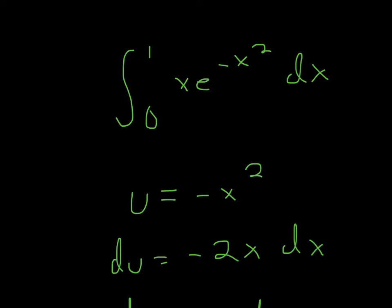So I'm going to try u-substitution to evaluate this function. I'm going to set u equal to negative x squared. So I take the derivative of both sides, so it's going to be du equals negative 2x, because I bring down the 2, 2 minus 1 is 1, so it's going to be negative 2x dx.